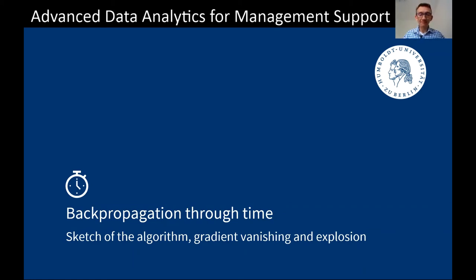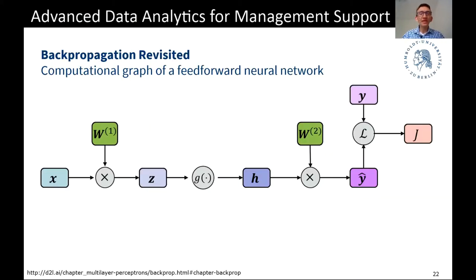Let us have a look at backpropagation through time and the issues that it brings about when we use it for training neural networks. In the case of ordinary, vanilla backpropagation, we made use of computational graphs — the computational graph of a feed-forward neural network. This way of representing the network is based on the textbook 'Dive into Deep Learning.' We essentially just did it in the previous session.